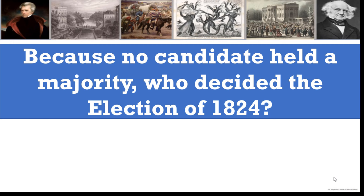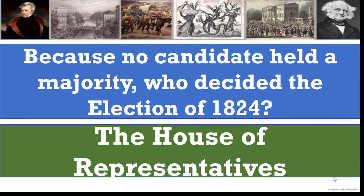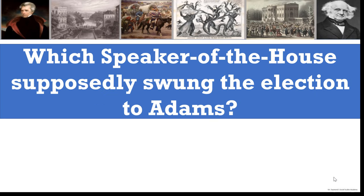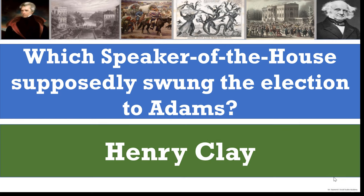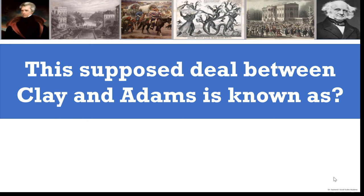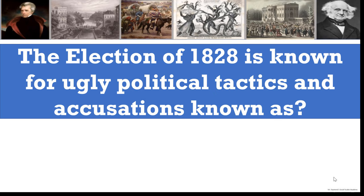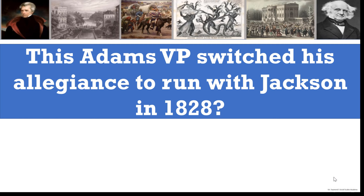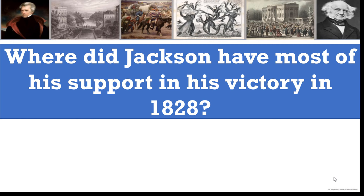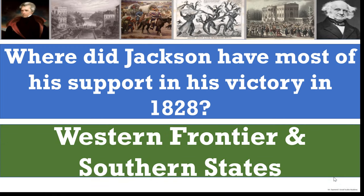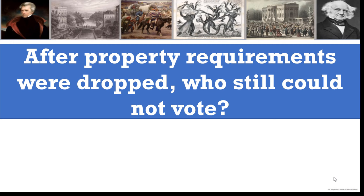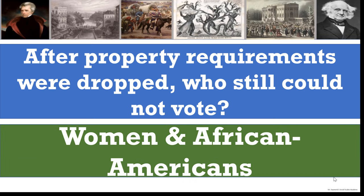Because no candidate held the majority, the House of Representatives decided the election of 1824. Henry Clay, as Speaker of the House, supposedly swung the election to Adams — and that supposed deal between Clay and Adams was known as the Corrupt Bargain. Despite Jackson getting the most votes, John Quincy Adams won the election of 1824. The election of 1828 is known for ugly political tactics and accusations called mudslinging. Adams' VP John C. Calhoun switched his allegiance to run with Jackson in 1828. Jackson had most of his support in the western frontier states and the southern states. After property requirements were dropped, women and African Americans still could not vote.